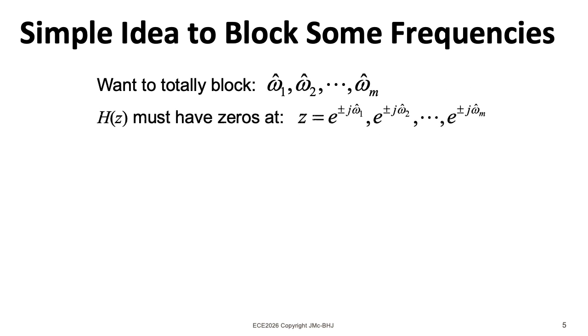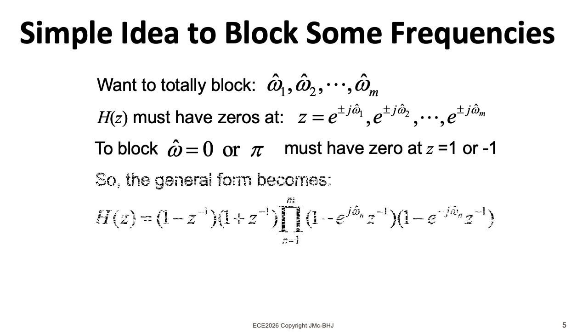So if you want to block a whole bunch of different frequencies, you can use the same basic idea. You just multiply these forms representing these zeros together.